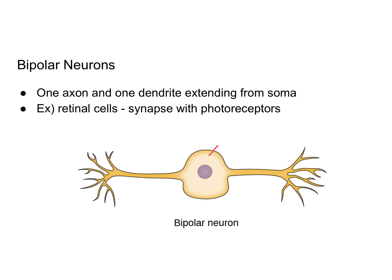Bipolar neurons have a soma or cell body with a single dendrite and a single axon extending from the cell body. An example of a bipolar neuron is a neuron in the retina, which is the sensory structure in the eye. There are photoreceptors that change when light energy hits them, causing an action potential, and those photoreceptors synapse with these bipolar neurons to pass the information to other neurons so that the signal can ultimately reach the brain.